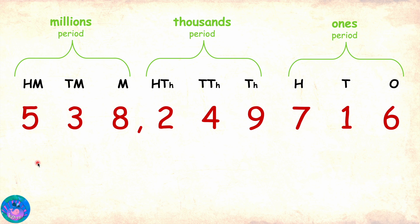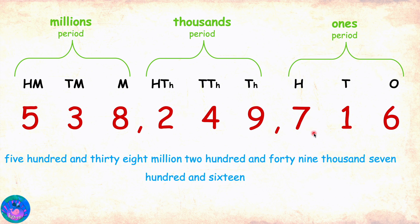For writing, we will put a comma between the periods and let's start reading. We will start reading from the leftmost period. The format will be number and the period followed by period name, except for ones period where we do not read the period name. Correct. So, this number is five hundred and thirty-eight million, two hundred and forty-nine thousand, seven hundred and sixteen.